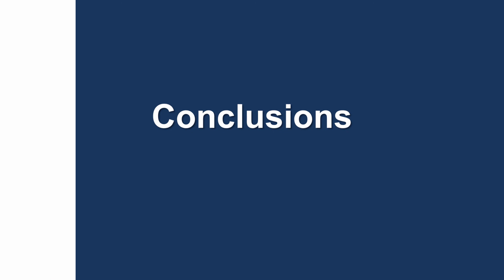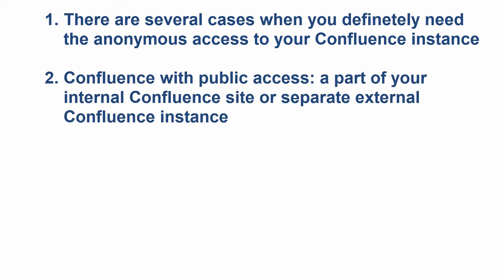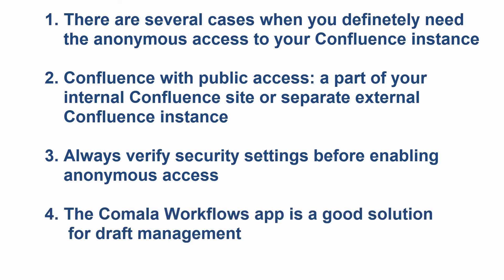At the end of our lesson, let's sum up the new information. Anonymous access to a Confluence instance is useful when the number of content editors is significantly smaller than the number of viewers, or when you want to share your information with a lot of users all over the world. There are two implementation cases of Confluence with public access: a part of your internal Confluence site, or a separate external Confluence instance — each option has its pros and cons. You need to verify a couple of security settings before enabling anonymous access. The Comala Workflows app is a good solution for managing page drafts in your Confluence with public access.